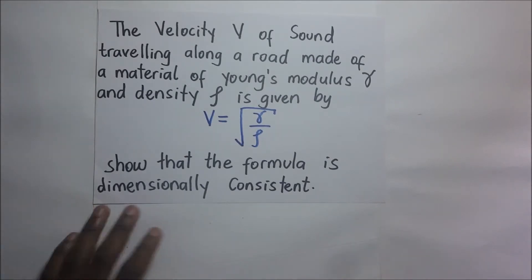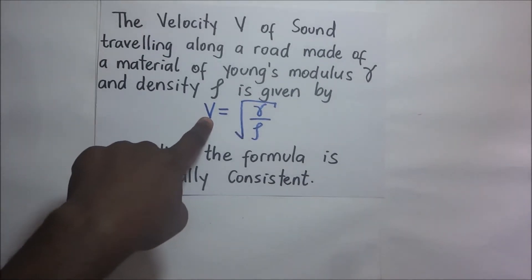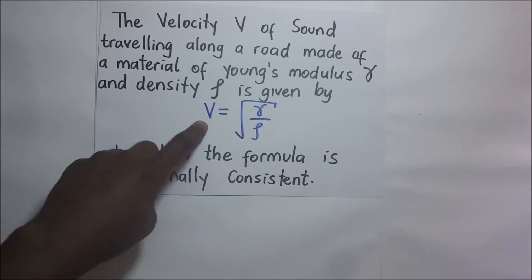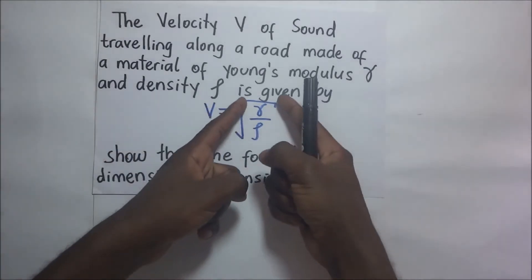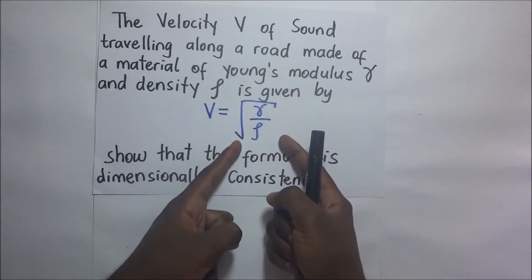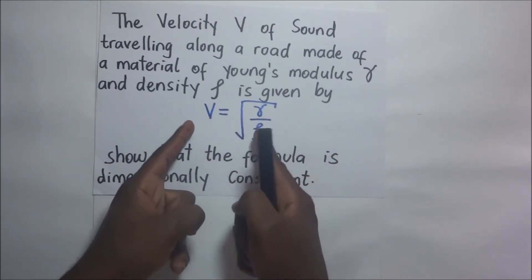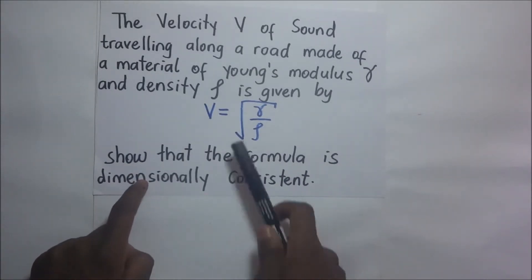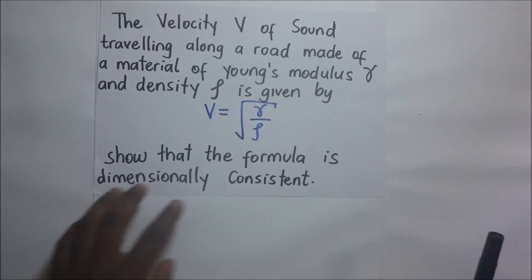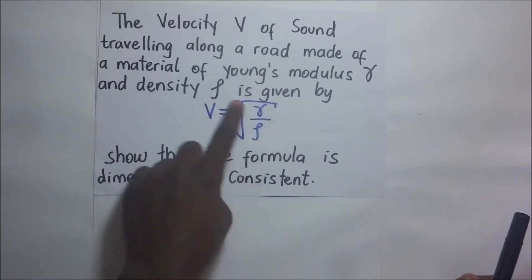To show that this formula is dimensionally consistent means that we're supposed to get the dimensions of the quantities on the left hand side equal to the dimensions of the quantities on the right hand side. And if the two quantities are the same, it means that the formula is dimensionally consistent. So here we are simply supposed to be showing that the dimensions of V are the same as the dimensions of this whole thing.